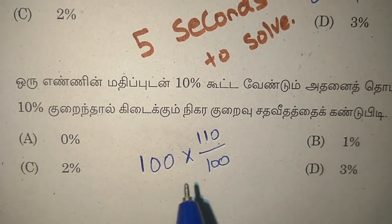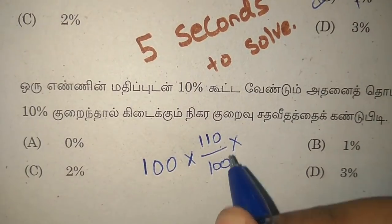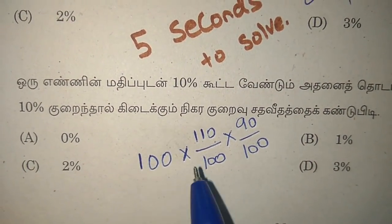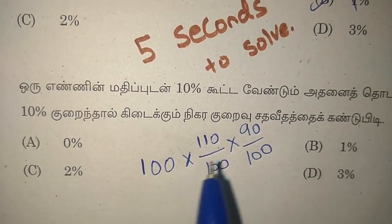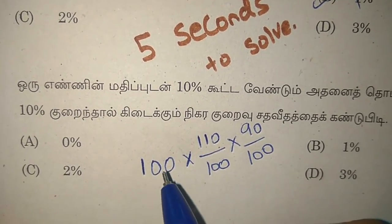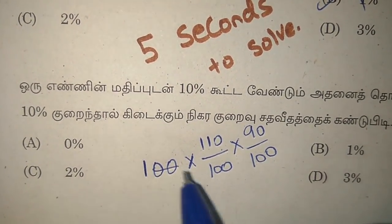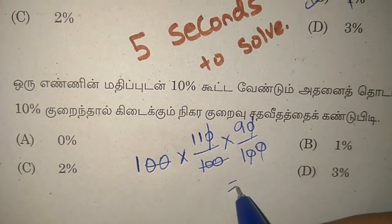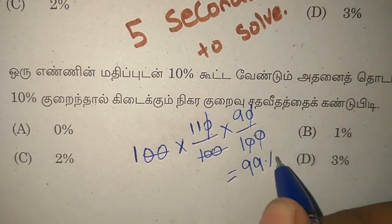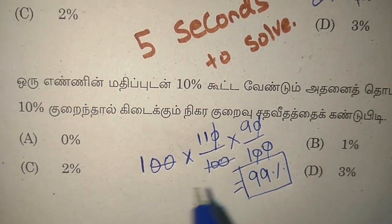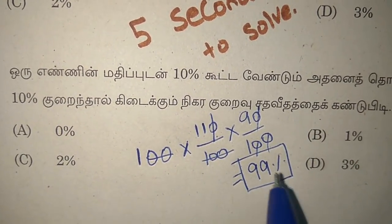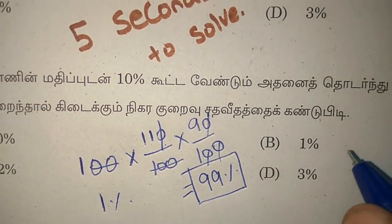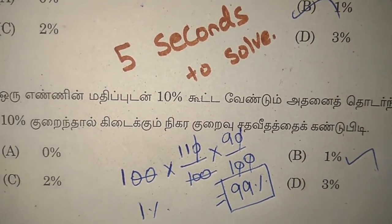We take the same 100. To 10, we take the same 10 to 10. You can add 10 and add 10. If you cancel it, you will get 90% of the percentage. If you add 100% of the percentage, you will get 90%. Then the answer is 1. So we will get it simple.